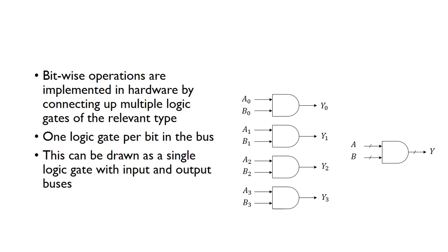Rather than drawing the situation where you might draw out the four different gates, we normally just draw it as a single logic gate. The little dash on the arrows tells us that it's a bus. You could also write four to tell us that it's a four-bit bus.